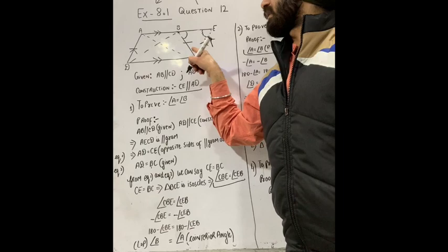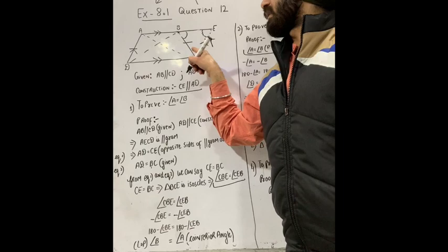The fourth part requires proving AC is equal to BD. We use the triangle congruence already proved: triangle ABC is congruent to triangle BAD. So by CPCT, AC is equal to BD.